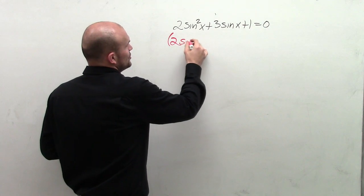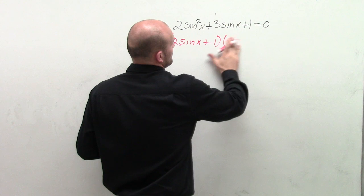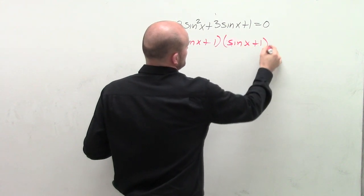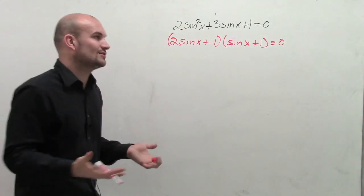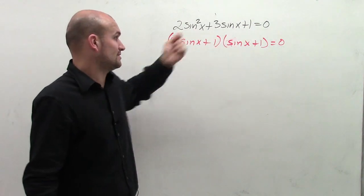I can rewrite this as 2 sine of x plus 1 times sine of x plus 1 in factored form. So by factoring this out, I'm going to get this form. And I can just double check this by doing FOIL to see if it's correct.